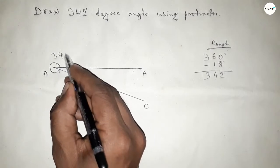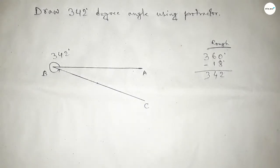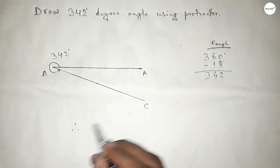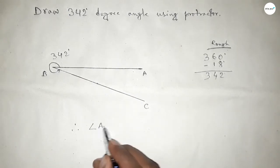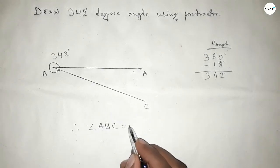Taking this here as point C. So angle ABC up to this is 342 degree angle. Therefore angle ABC equals 342 degree angle.